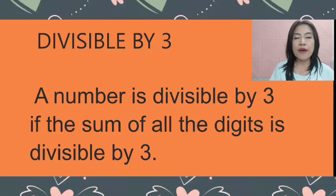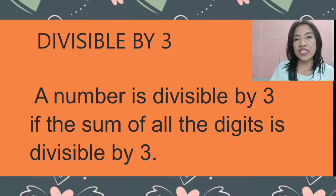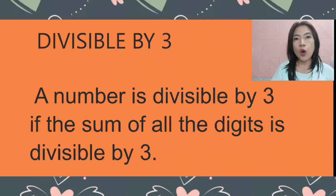Let's continue. We have here divisible by 3. A number is divisible by 3 if the sum of all the digits is divisible by 3. It means we are going to add all the digits.